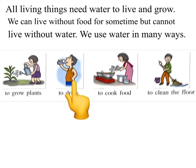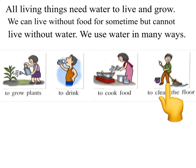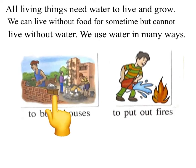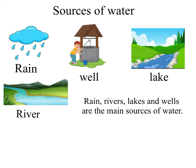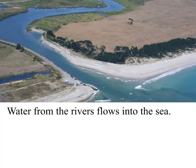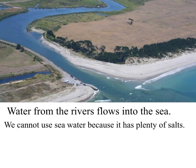We use water to drink, to cook food, to clean the floor, to build houses, and to put out fires. Sources of water: rain, rivers, lakes, and wells are the main sources of water. Water from the rivers flows into the sea.